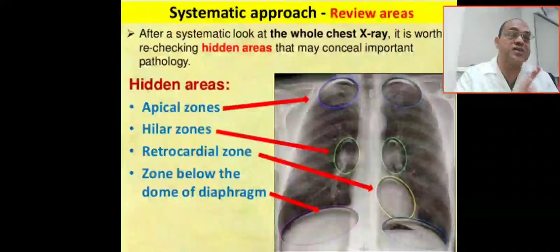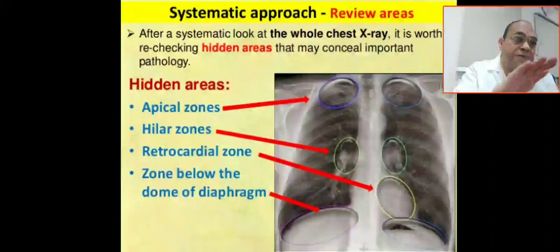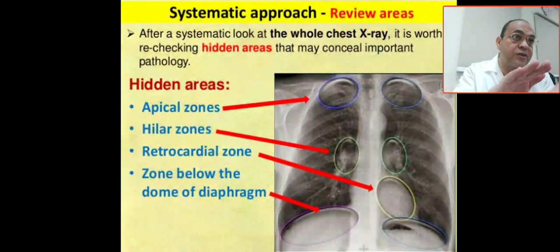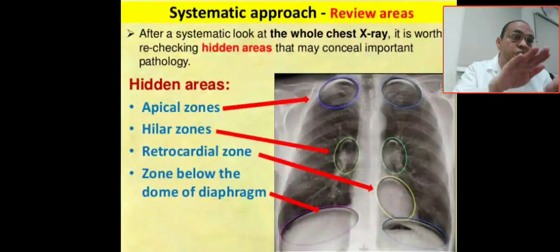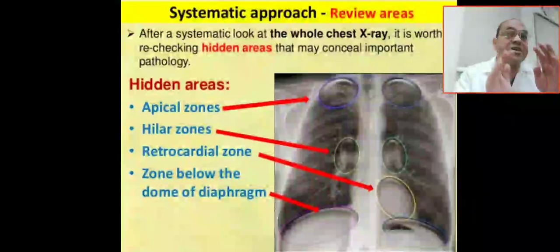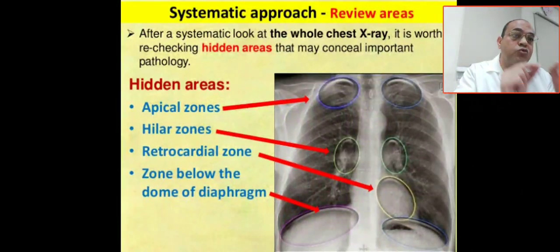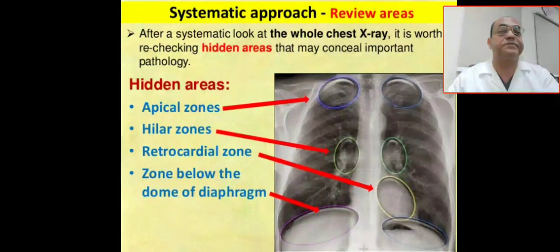The third hidden area is the retrocardiac zone. The cardiac shadow can hide areas of the lung that may have a lot of pathology. The fourth area is the zone below the dome of the diaphragm, which can be obscured by the liver and spleen.